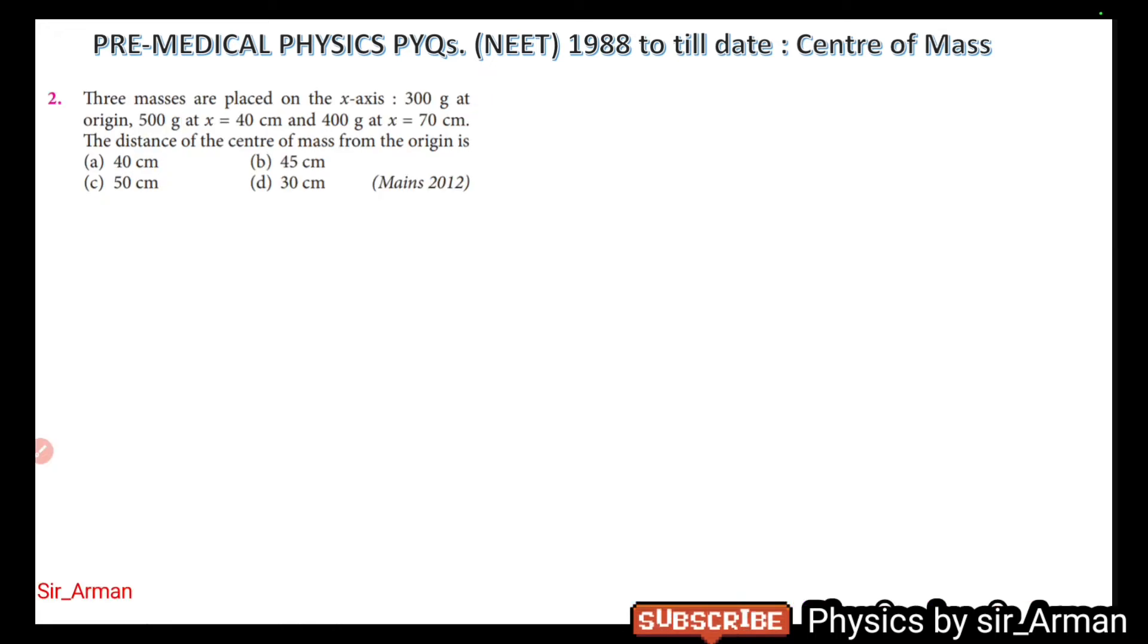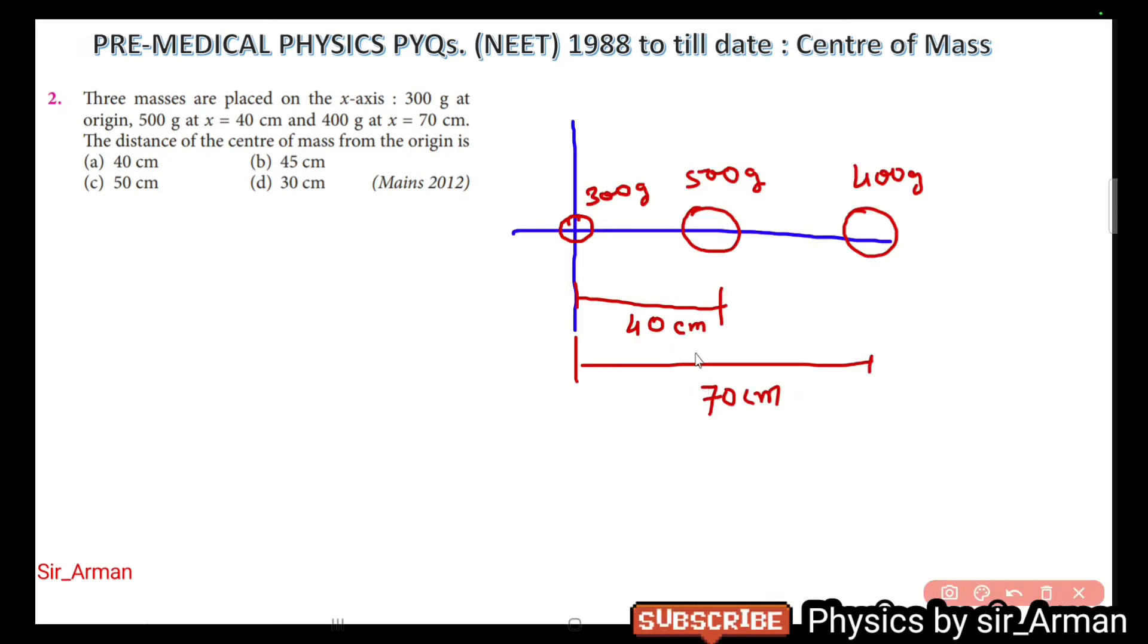In this question, three masses are placed on the x-axis: 300 grams at origin, 500 grams at x equals 40 centimeters, and 400 grams at x equals 70 centimeters. The distance of the center of mass from the origin is what we have to find.